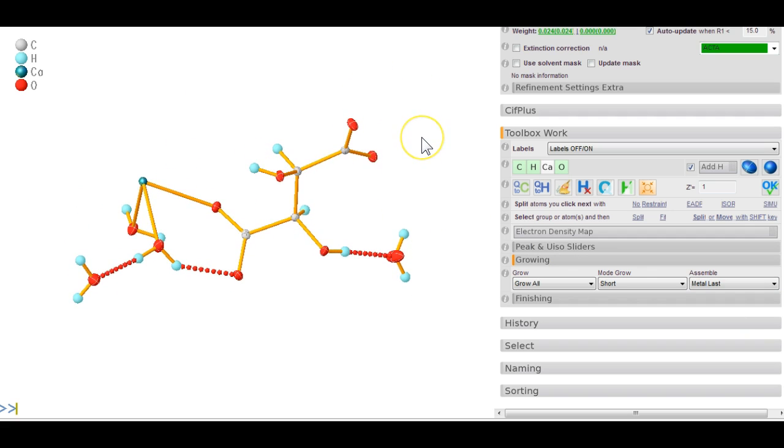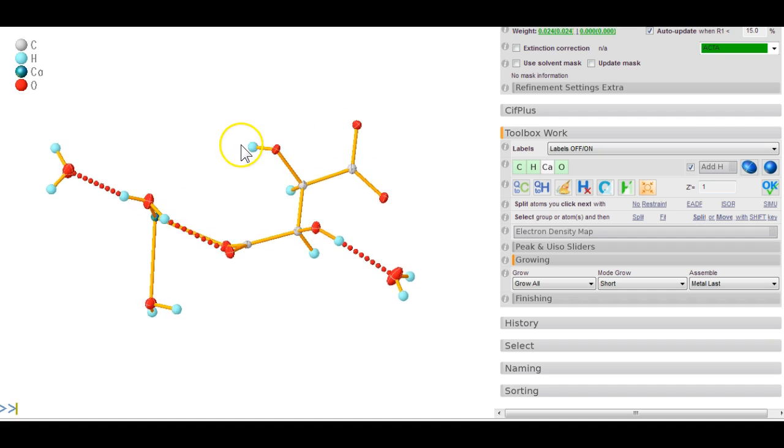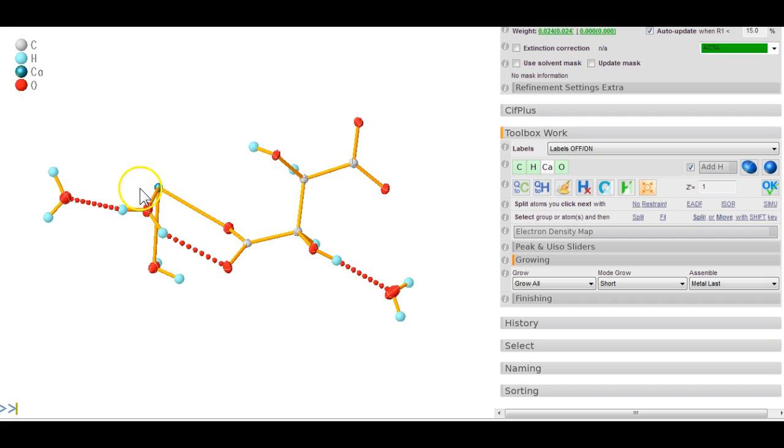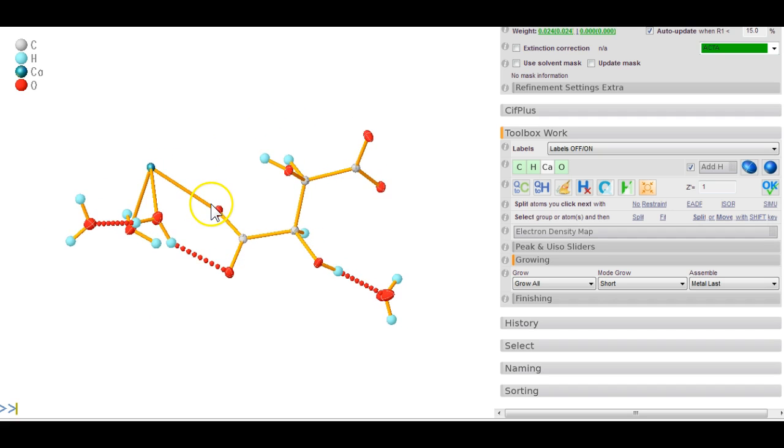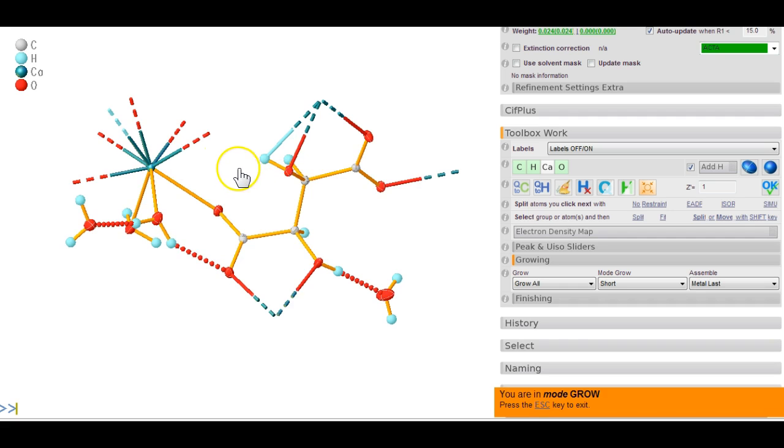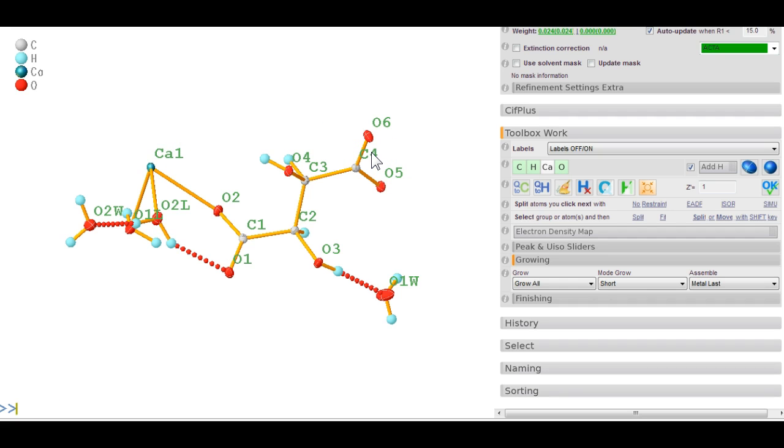We see the tartrate molecule here and the metal here, but some of these things bond to this. Control G shows where this goes—to calcium one and oxygen six. Press F3 to get labels. Oxygen six is this one, so there's a bond between this and this. You have to make a decision of what you want to actually show.